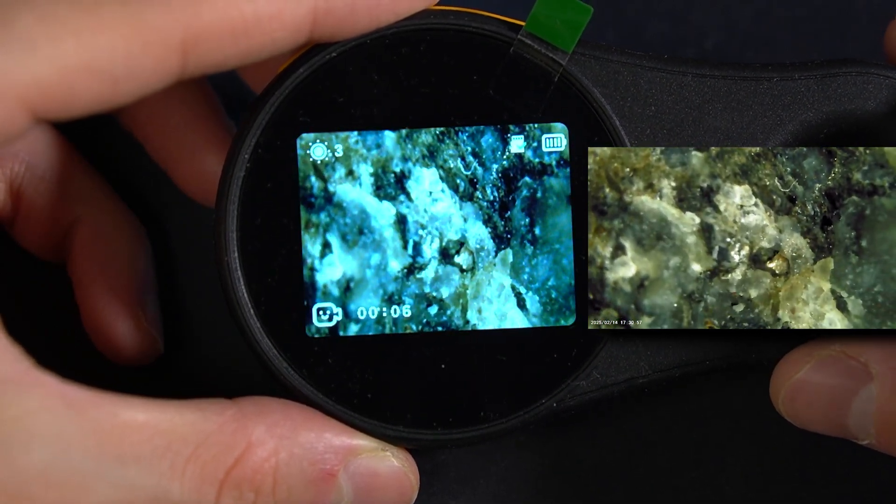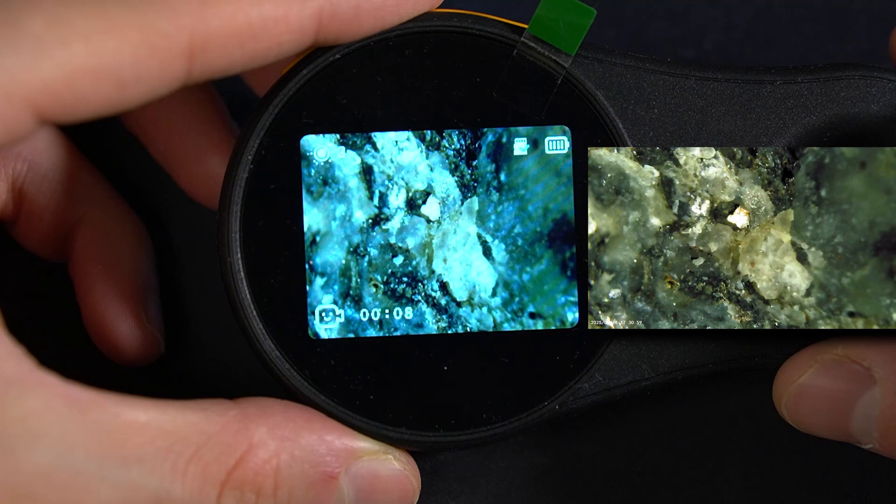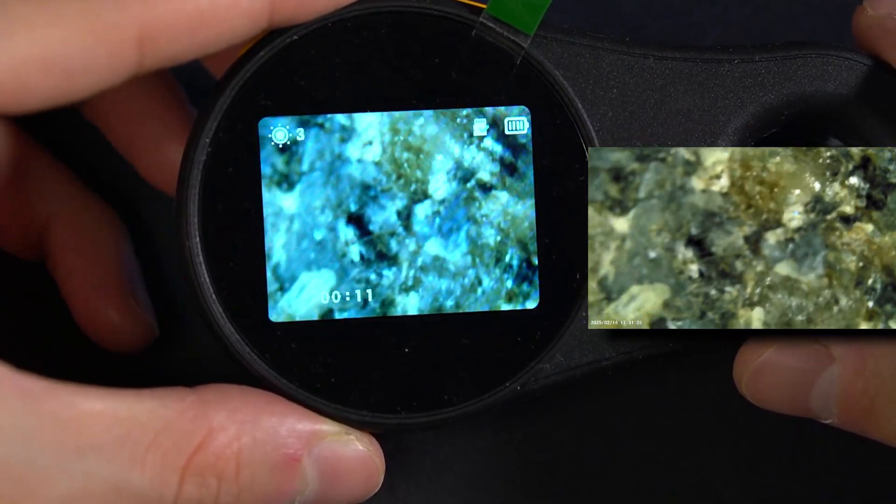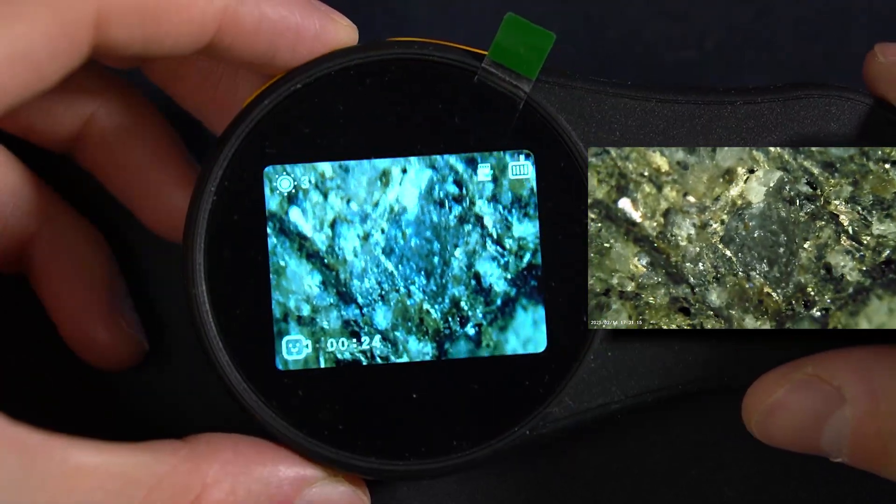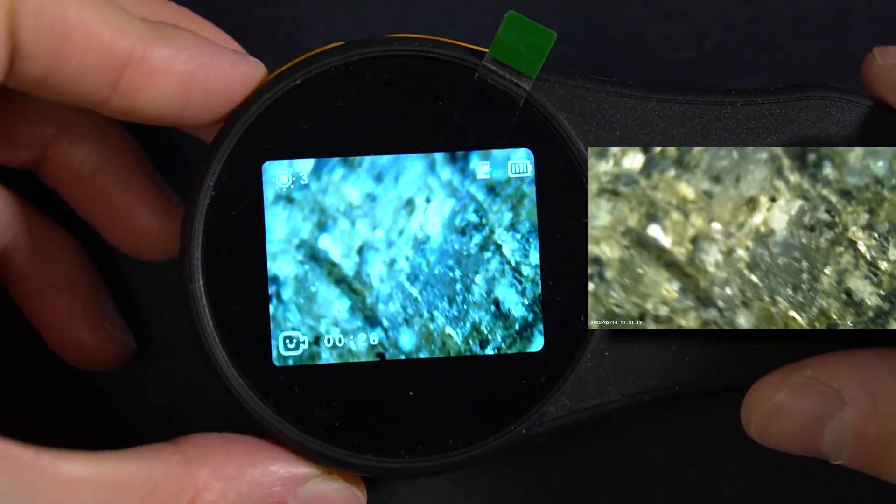For example, with it I was able to figure out that gold minerals in this piece of rock are most likely micas. You can even zoom in to get even a closer look at the object you're inspecting.